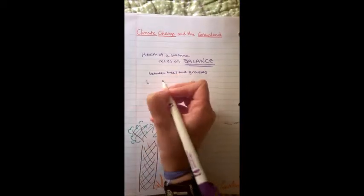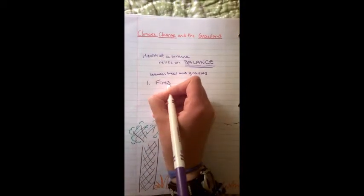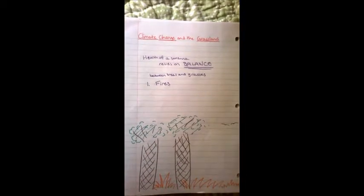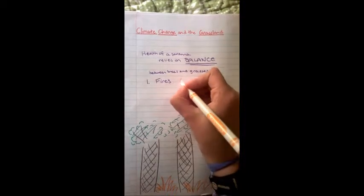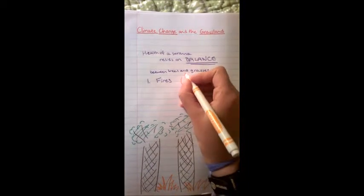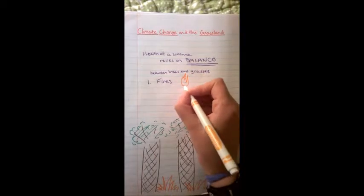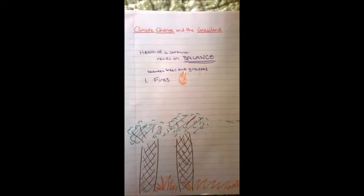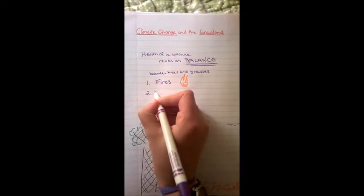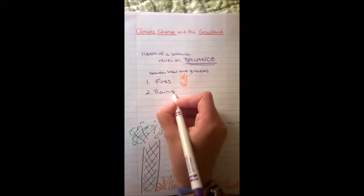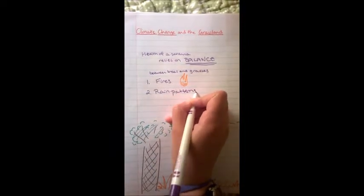Normally a few factors help keep trees in check. One is fires. Grasses can grow back very quickly while trees cannot. Trees are burnt down and take much longer to recover. However, when trees reach a certain height, they become fireproof. If tree growth is favored, they can reach that height more easily.